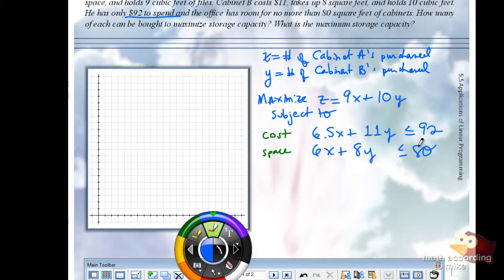Can he purchase a negative amount of cabinets? No. The government's not going to come in and repo his cabinets. So make sure we have these inequalities. Remember, the first two, the cost and the space, are called functional constraints. And for your word problems, you're most likely going to have non-negative constraints.